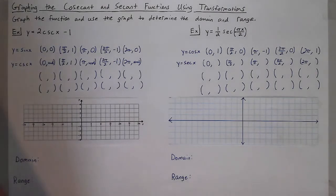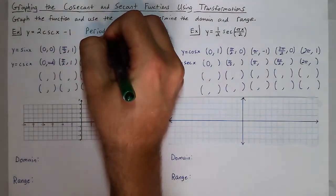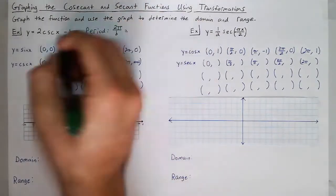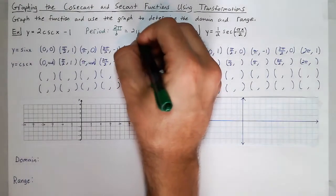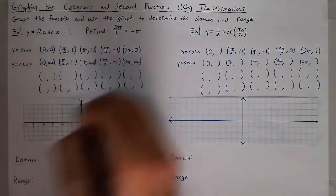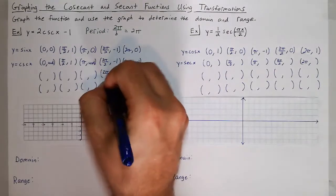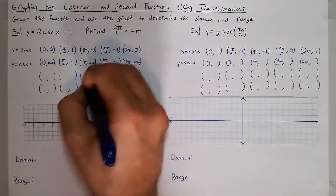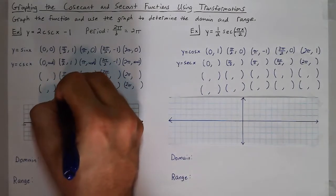Since cosecant is the reciprocal of sine, the period of cosecant is also 2π. The formula is 2π over b. We have an understood 1 in front of x, so the period is 2π over 1, which is 2π. We won't see any change in the period — just a change in the y values. So first we're going to multiply our y values by 2, and then subtract 1, following order of operations.